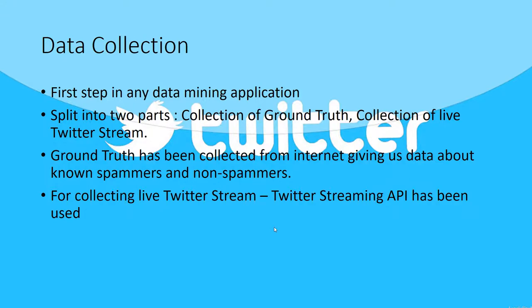In data collection, the first step, we are splitting data collection into two parts. The first part is collection of ground truth and the second part is collection of the live Twitter stream. The ground truth can be collected from the internet and is used as a basis to train the classifier. Once the ground truth is collected, we can train a classifier and it knows what categories to place different types of tweets into. The live Twitter stream data is collected through the Twitter streaming API.